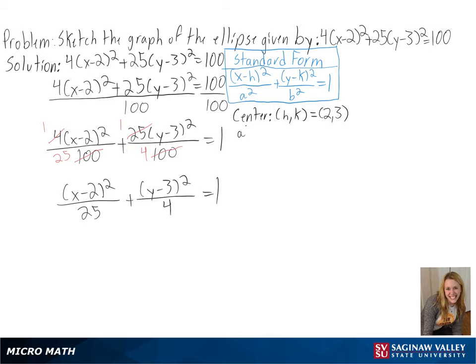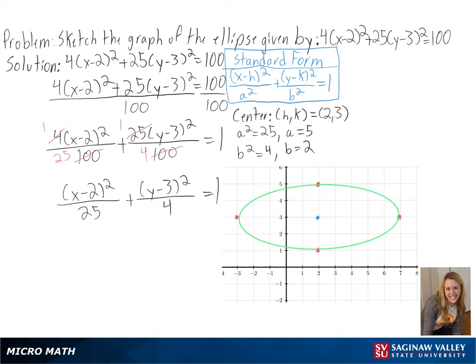Next, we need to figure out a and b since they determine our vertices. For a, we get 5, so we will be going left and right 5 units. For b, we get 2, so we will be going up and down 2 units. And now we can sketch our ellipse.